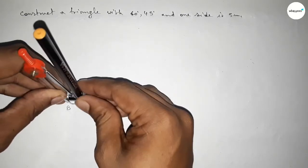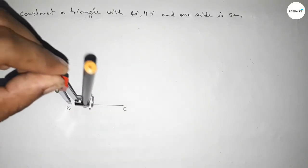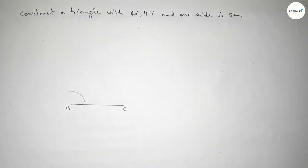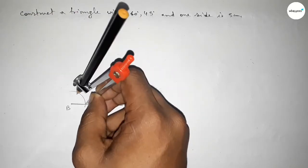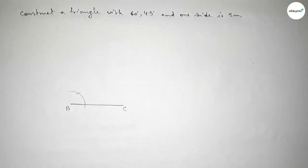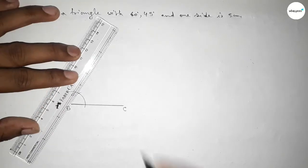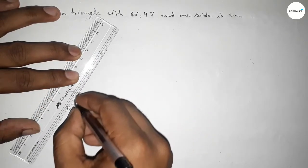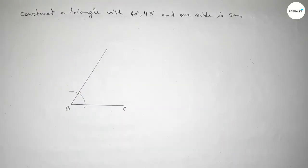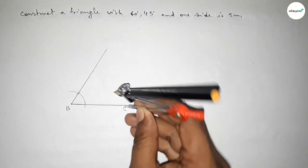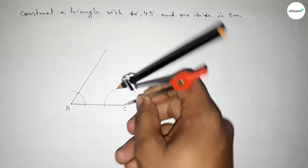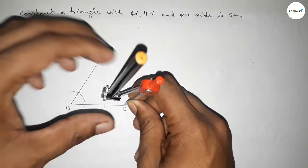Putting the compass on B, taking any length and drawing an arc, then putting the compass at the arc intersection with the same length and cutting here — both curves intersect at a point. Joining this line gives us a 60 degree angle.